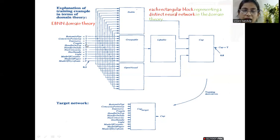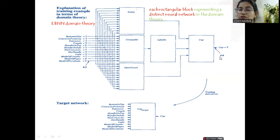Some clauses are expressed as T and some as F. If it is false, the weight value is 0.2; if it is true, the weight value is 0.8. The final value of this should be T (cup). Whenever it is true, the value is 0.8. The final network should give us the target function with all inputs and outputs.